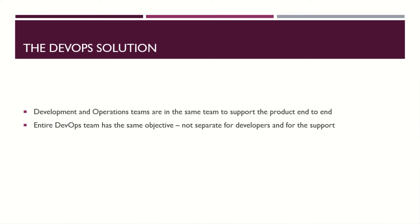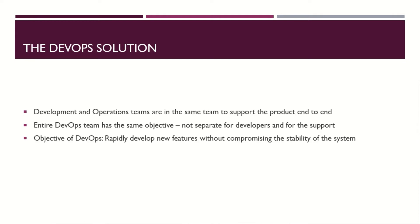The objective for a DevOps team would be to rapidly develop new features and introduce them to production as quickly as possible. And most importantly, while changes happen to the product, the environment needs to remain stable. We are not compromising on the stability of the system in order to push changes — we want both. How do we maintain stability while introducing rapid changes?